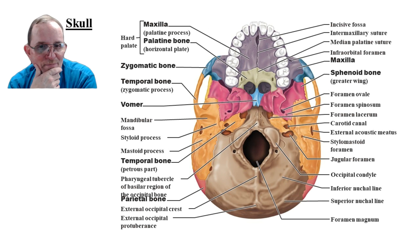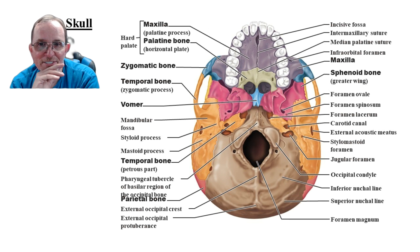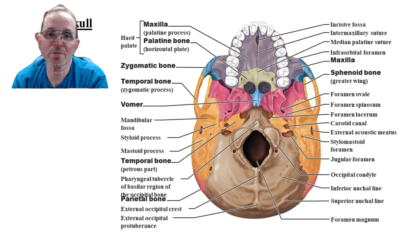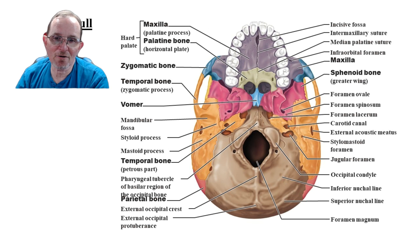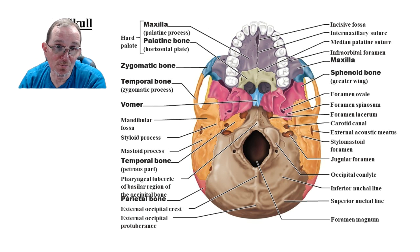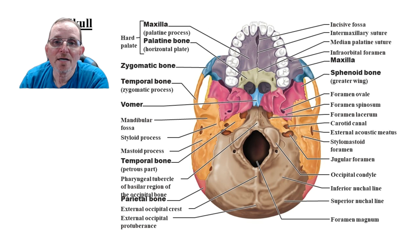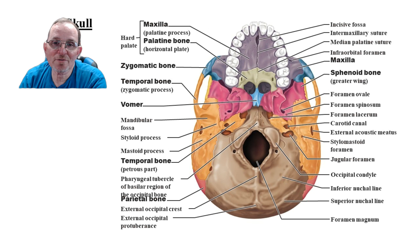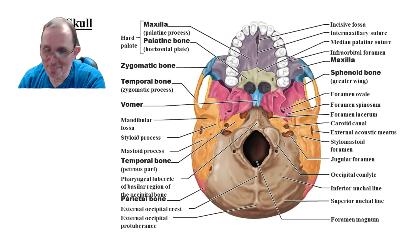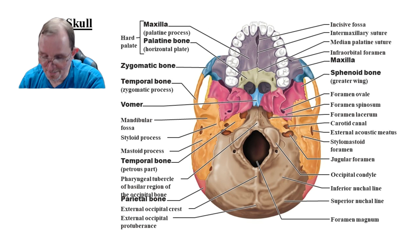Again, a very busy slide, but it's a good reference point. You can see all of the bones from the bottom, as well as some of the holes that have important things coming in and out of them. There's the hard palate of the mouth — part of it is the maxillary bone, while the back part is actually the palatine bone, and we'll talk more about that coming up.